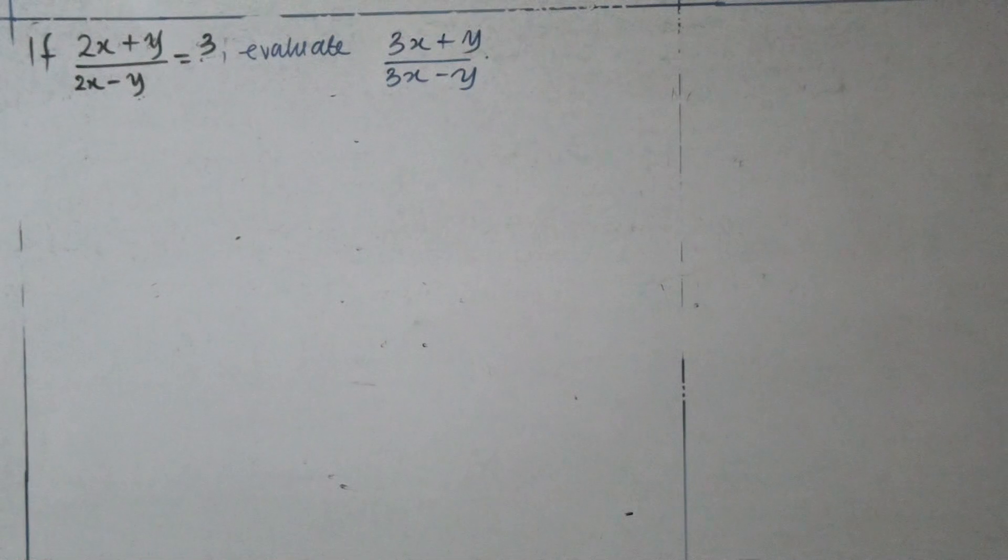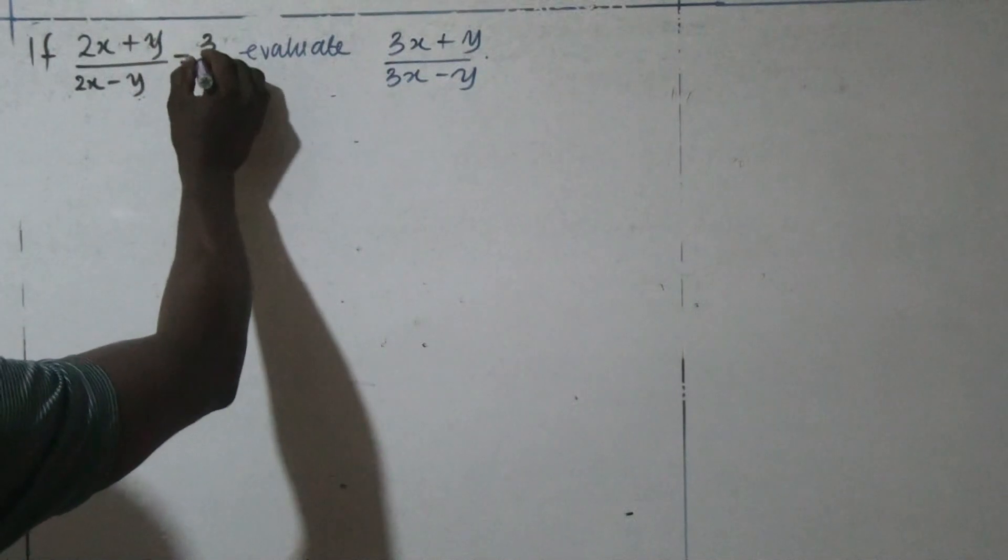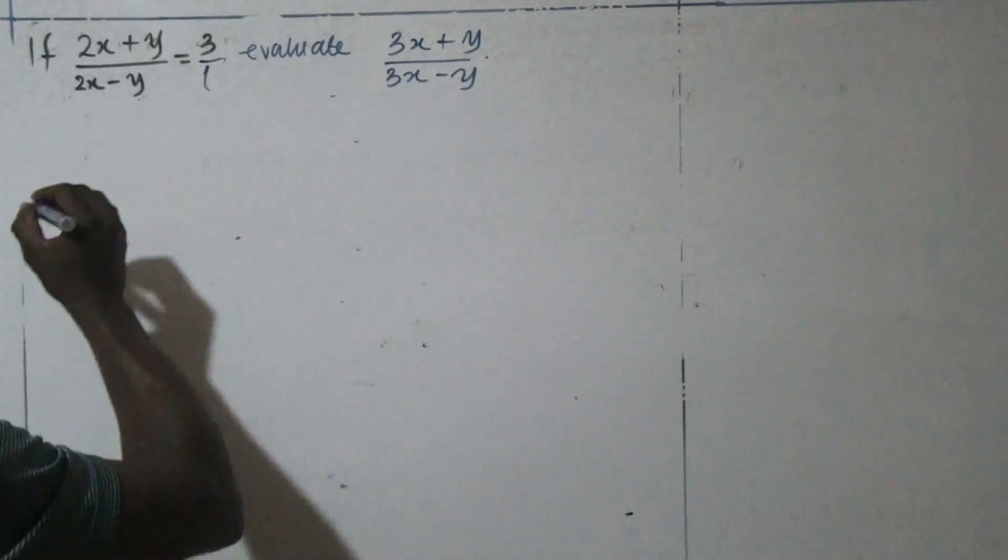First, we resolve this using simultaneous equation. Then, on the other hand, we use the second method by multiplying through by the LCM. The first approach here, seeing this type of question, what essentially we should do is, we can make this 3 as 3 over 1.